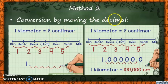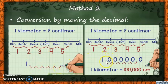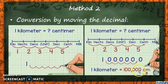Let's look at method 2 — conversion by moving the decimal. Instead of multiplying or dividing by powers of 10, we move the decimal as we move along the metric line. From kilo to centi, how many times do we move? 1, 2, 3, 4, 5 — so we move the decimal five places, giving us 100,000. As we move, we use zero as a placeholder.